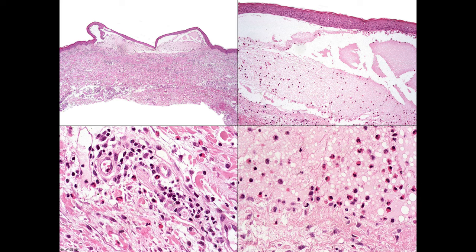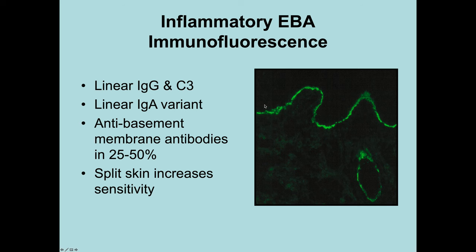Regarding immunofluorescence in inflammatory EBA: rather like bullous pemphigoid, it is characterized by linear deposition of IgG and C3 on direct immunofluorescence. Some examples show linear IgA deposition. On indirect immunofluorescence, sensitivity is lower — only 25-50% of patients show antibodies. However, using split skin as a substrate increases sensitivity considerably.